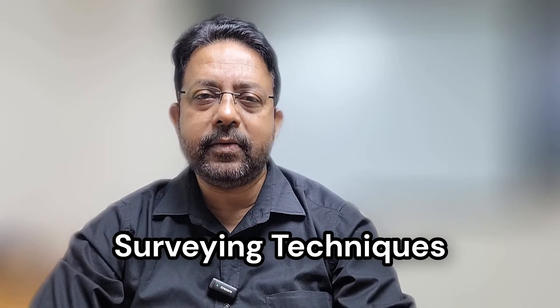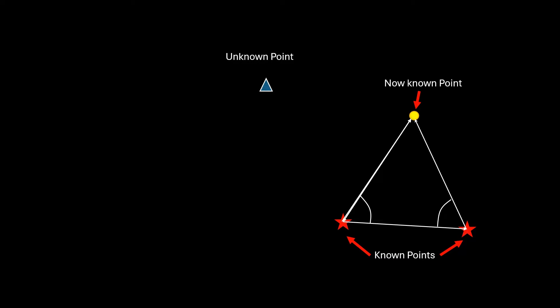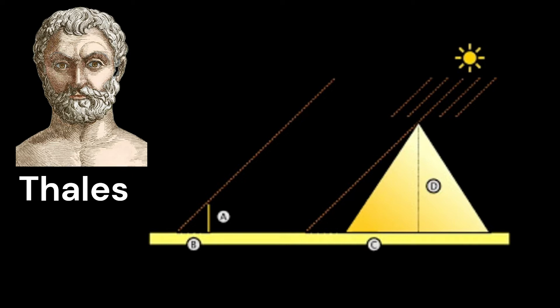Let's now discuss some of the techniques that surveyors use in everyday surveying. Triangulation has been a fundamental technique in surveying for centuries and remains important despite modern technologies like GNSS. It involves creating a network of triangles — surveyors measure the angles from two known points to an unknown point, forming a triangle that allows them to calculate the position of the unknown point. Triangulation is particularly useful for large-scale surveys and in areas where direct distance measurement is difficult. The Greek philosopher Thales used triangulation to estimate the height of the pyramids around the 6th century BCE.